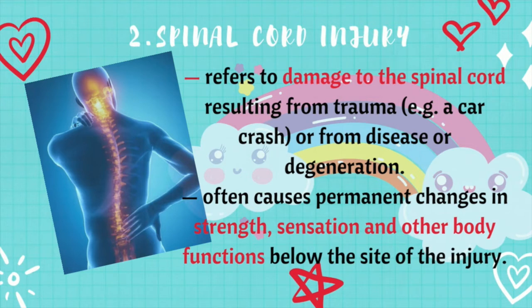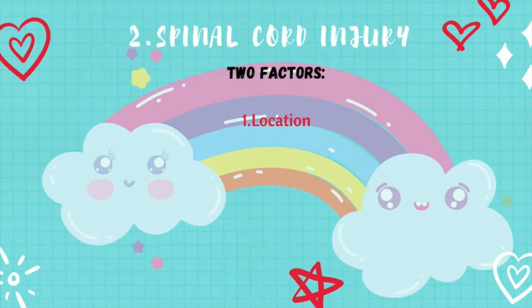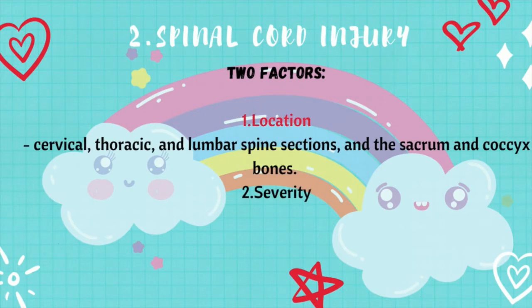Your ability to control your limbs after a spinal cord injury depends on two factors. The first one is about the location, and the second one is about the severity. Our spine is divided into cervical, thoracic, lumbar spine, sacrum, and coccyx bones. The higher the injury is, the more problems you will have, because anything below that injury will be affected — all of the functions below that level.